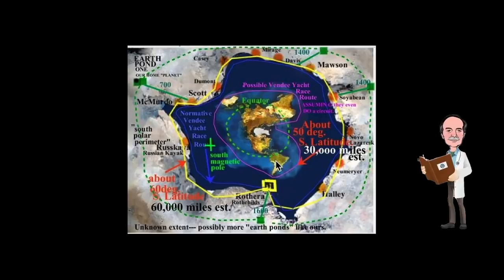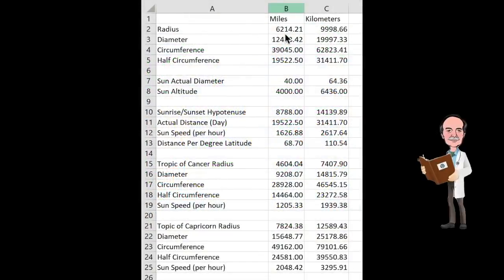Now one other thing that I want to touch on is the numbers that GLEAM provided for this flat Earth map. The distance from the North Pole to the ice wall is 6214 miles, almost 10,000 kilometers. The sun is 40 miles in diameter and located 4,000 miles above the surface of the Earth. Here's the meat and potatoes of this, though. So, the circumference of the Tropic of Cancer is listed here as 28,928 miles. Now mind you, the circumference of the equator is less than this. It's actually 24,901 miles. The circumference of the Tropic of Capricorn is listed at nearly 50,000 miles.